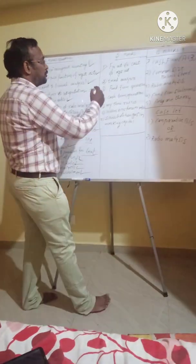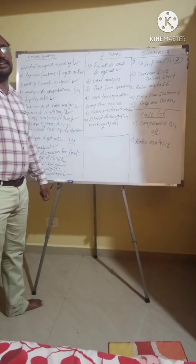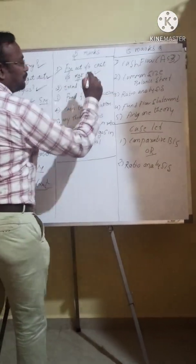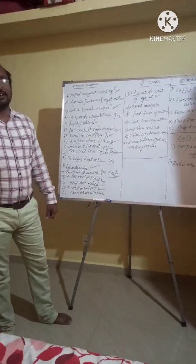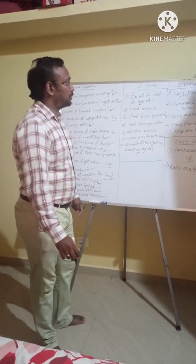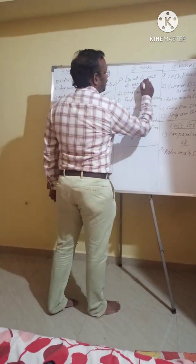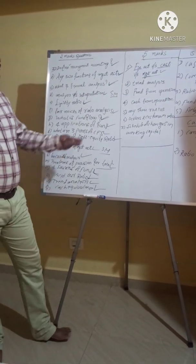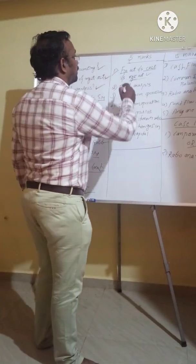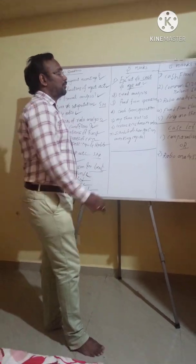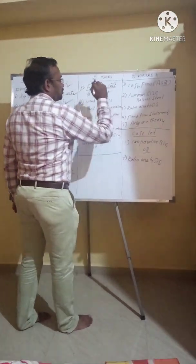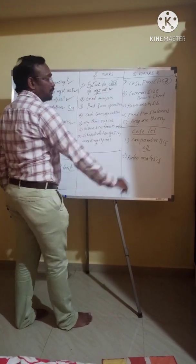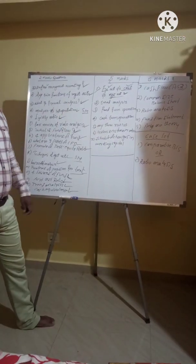Coming to the five-mark questions — write the difference between Financial Accounting and Management Accounting. This is a theory question. You should read theories on cost accounting and management accounting, or financial accounting and management accounting. If you are writing theory, you can concentrate on this.